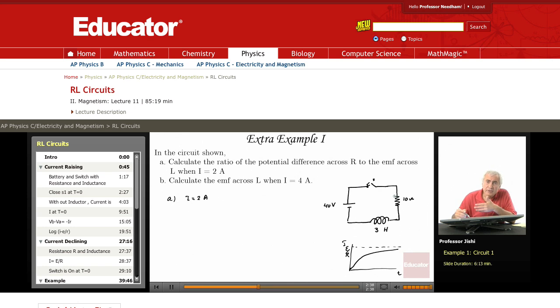Of course, the maximum current is E over R, which is 4 amperes. That's the maximum current.